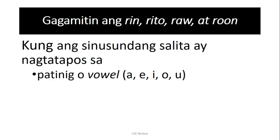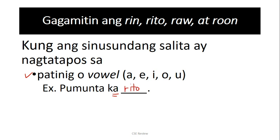A good example would be the sentence: pumunta ka blank. The rule follows kung ano yung preceding word or sinusundang salita. So, dahil ang sinusundan is 'ka,' which ends with an A — and since A is a vowel or patinig — this becomes rito. Pumunta ka rito. Come here. So again, ang determining factor is yung letter preceding the word. Kung ang sinusundang salita ends with a vowel, it becomes R.